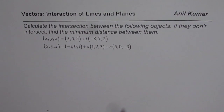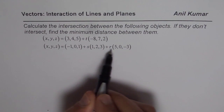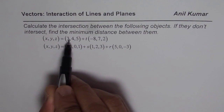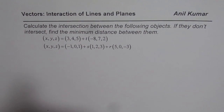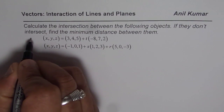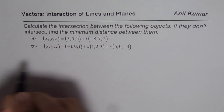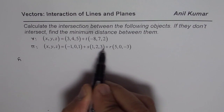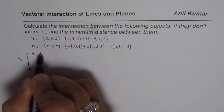The best way to find the intersection point when given the plane in vector form is to write it in Cartesian form, substitute the values of x, y, z, find parameter t, and then find the point. We'll begin by finding the normal to the plane using the cross product of its two direction vectors.